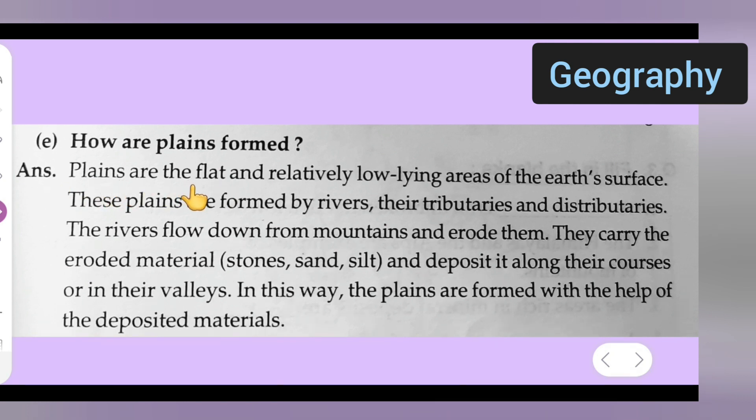The answer is: planes are the flat and relatively low lying areas of the earth's surface. These planes are formed by rivers, their tributaries and distributaries.